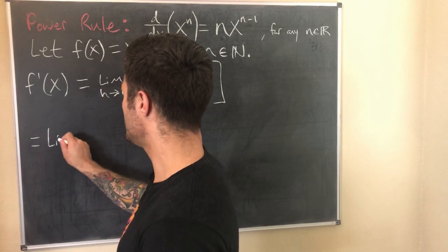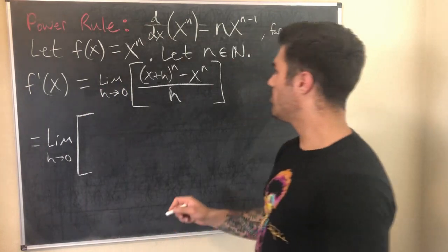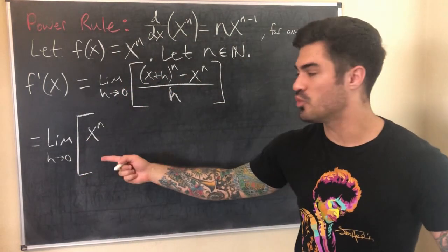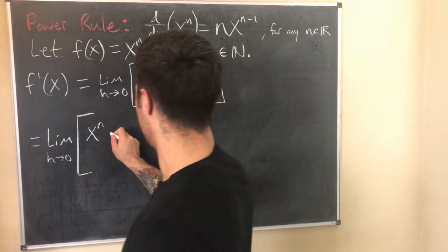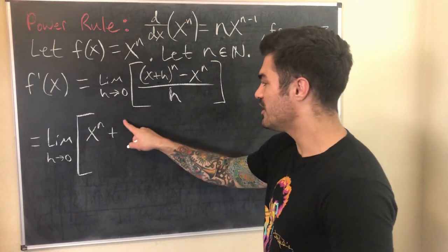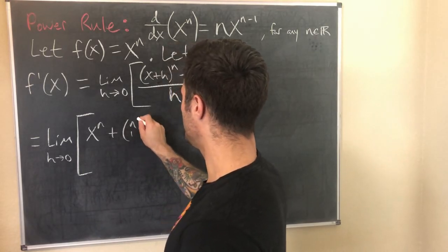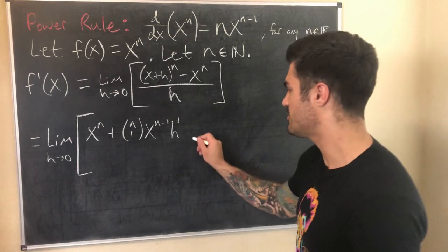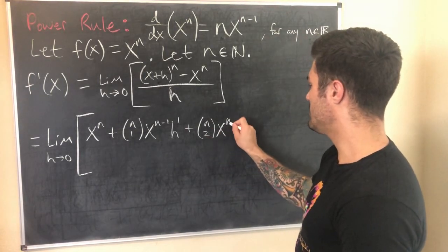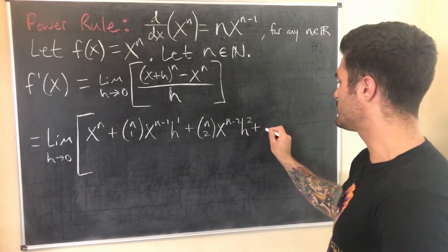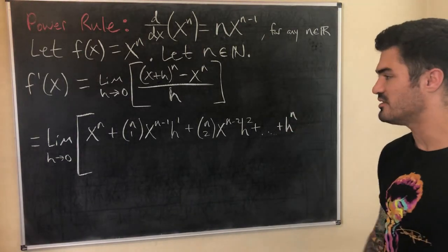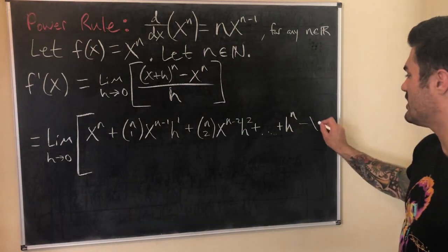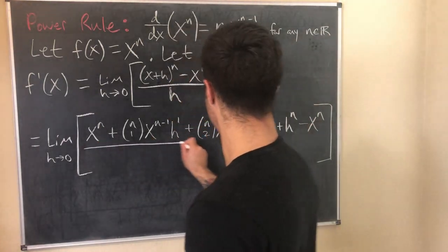So using the binomial theorem, this equals the limit as h approaches 0 of what? My first term is going to be x to the n, and technically in the front I do have n choose 0, but that's just 1, and at the end here I have h to the 0, that's just 1. So I'm just writing x^n. Plus, do y'all remember this pattern? It's n choose 0, n choose 1, n choose 2, all the way down. So this is n choose 1, and then the powers of x decrease by 1 each time, and the powers of h increase by 1 each time. That's the pattern. So then our next one is n choose 2, x to the n minus 2, h squared, and that's where I'm going to stop. Plus dot dot dot plus our last term, h to the n. Technically we have n choose n, that's just 1, and we have x to the 0, that's just 1. And then we still have that minus x^n, and this is still all over h.